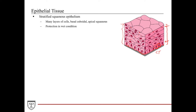This occurs in wet or moist conditions because the cells on the apical-most surface are still alive — they need fluids. Every single cell needs to be bathed in fluids and not dry out in order to stay alive. So this type of tissue is found in the oral cavity, esophagus, distal anal canal, vagina, and cervix — areas that encounter a lot of bacterial presence as well as relatively frequent force and friction, requiring protection for the underlying connective tissue.